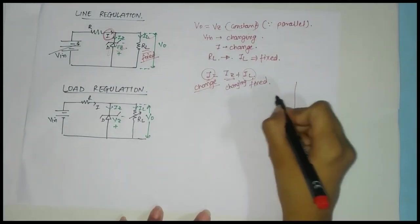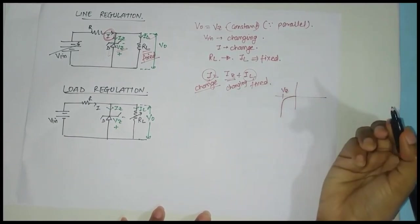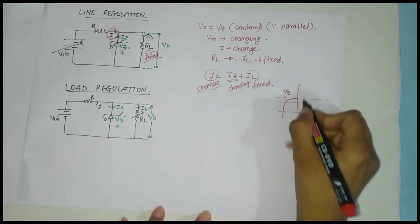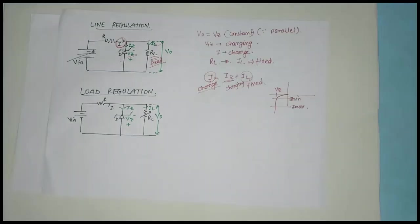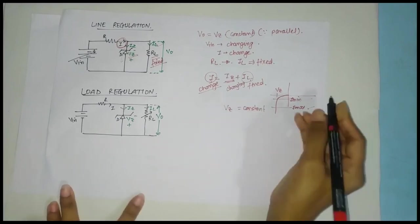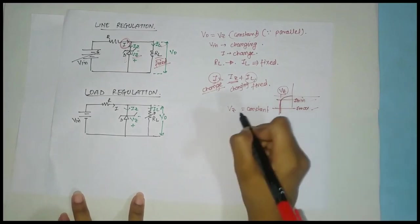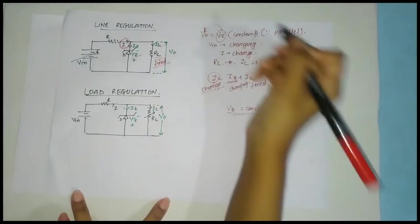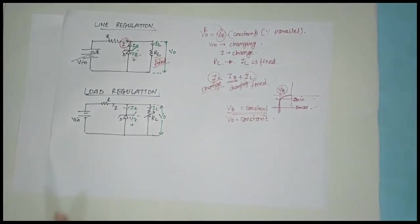Looking at the Zener diode characteristic graph: when the diode is operating at VZ, there is a range of current from I-minimum to I-maximum. If IZ is varying between I-minimum and I-maximum, we get a constant VZ from the graph. And since VZ is constant, it directly implies that our output voltage V-out will also remain constant. This was a short introduction to line regulation analysis using a Zener diode.